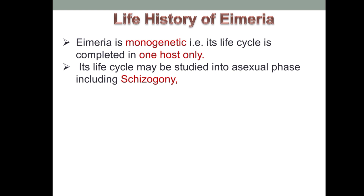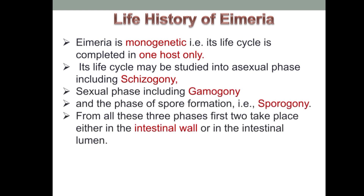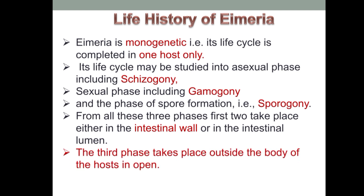The life cycle of Eimeria may be studied in three phases: the asexual phase including schizogony, the sexual phase including gamogony, and the phase of spore formation known as sporogony. The first two phases take place either in the intestinal wall or in the intestinal lumen, while the third phase takes place outside the body of the host in the open environment.